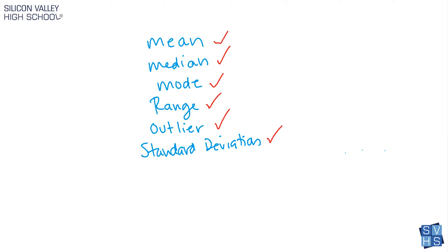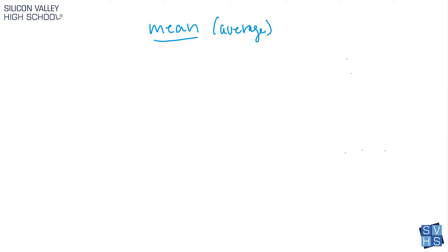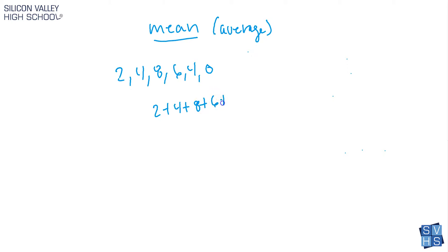The mean is totally normal everyday math — it's just the average. Math nerds like to say 'find the mean' but it really just means average. So if you had a data set like two, four, eight, six, four, zero, all you do is add them up: two plus four plus eight plus six plus four plus zero, divided by how many values there are — one, two, three, four, five, six — so divided by six.